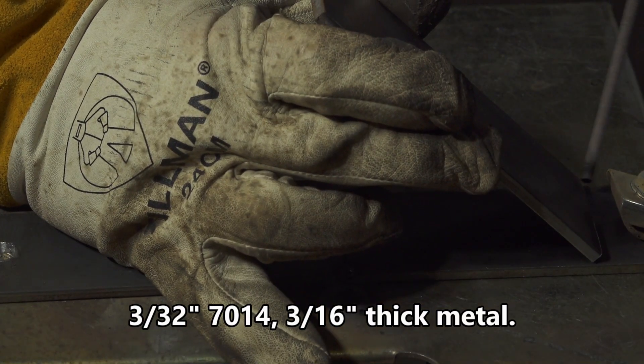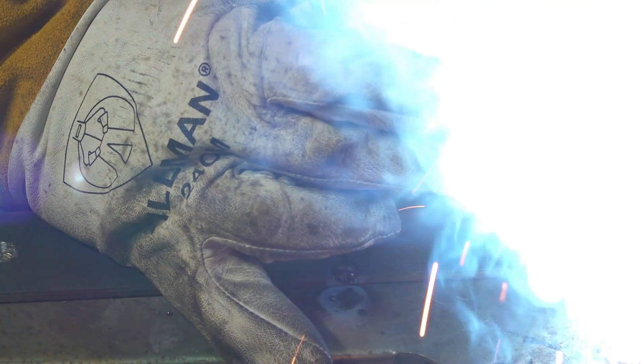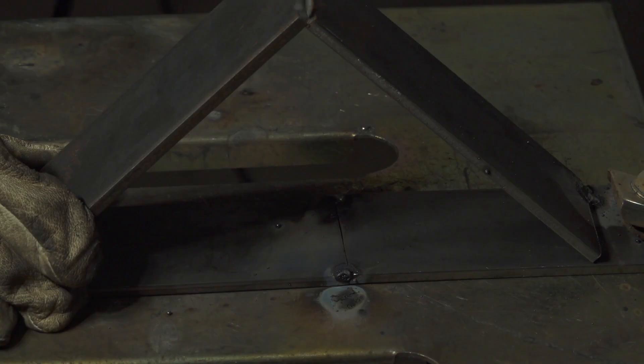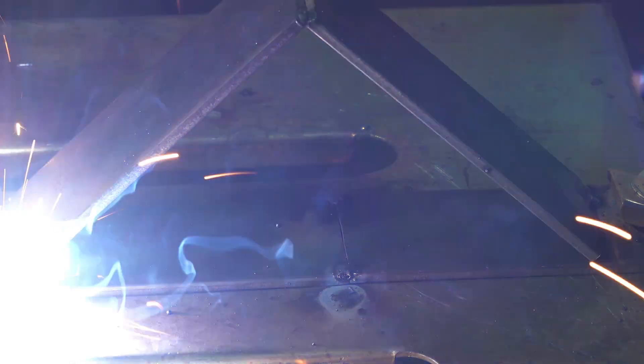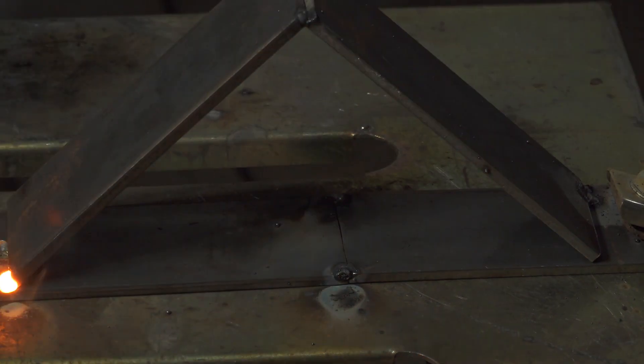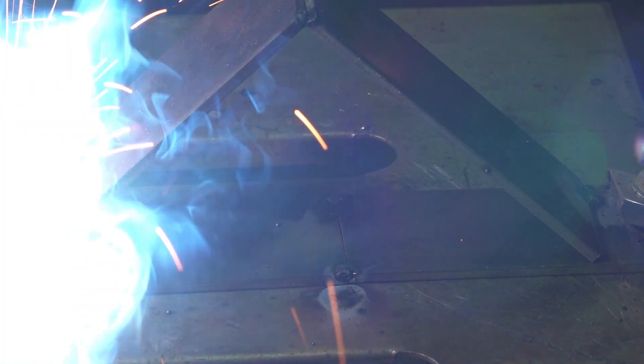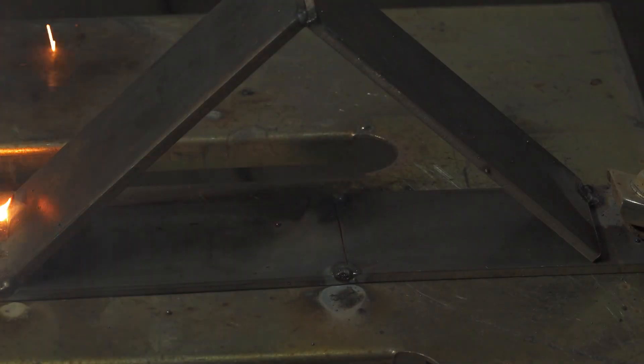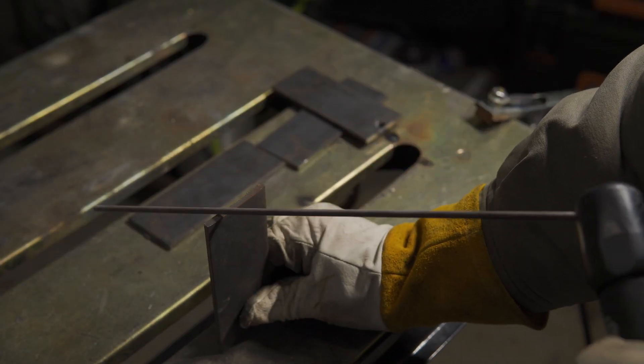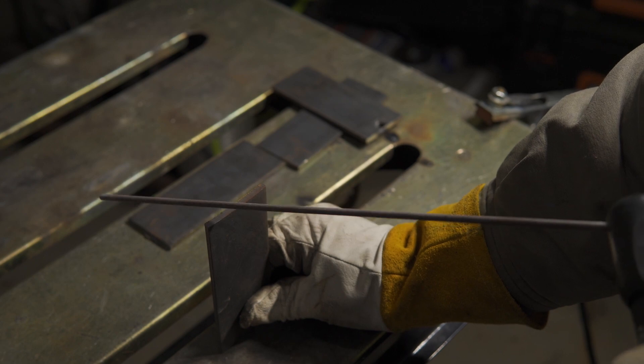But tack welding is what really makes me appreciate 7014 rods. When it comes to tack welding with a stick welder, a 7014 rod is like easy mode. There's iron in the flux of 7014 rods, so the flux itself is mildly conductive. In fact, if you touch the flux against the work, you can sometimes get little arcs right through the flux.